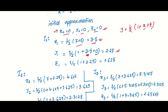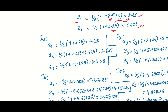In the second iteration, we use x1, y1, z1 as the base values. We compute x2, y2, and z2. The value of y comes out to 2.25, and z comes out to 1.625. The second iteration is now complete.